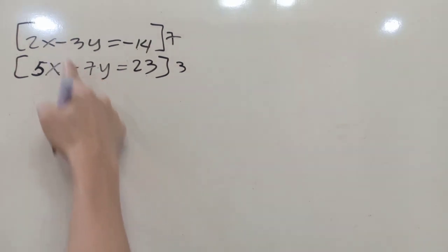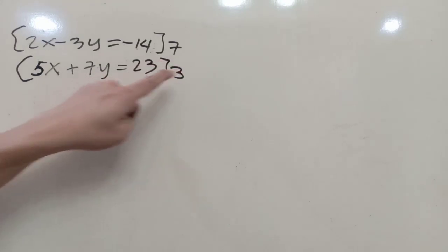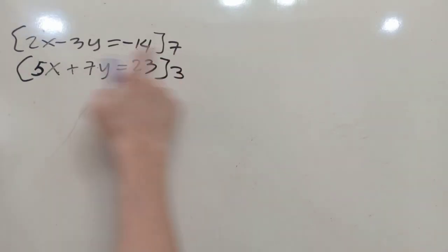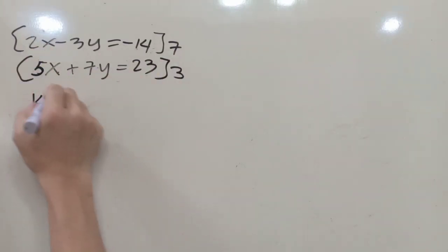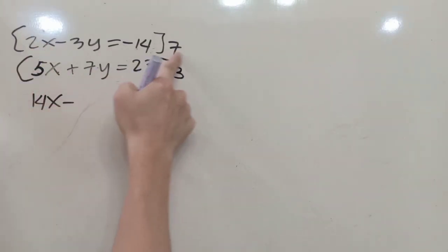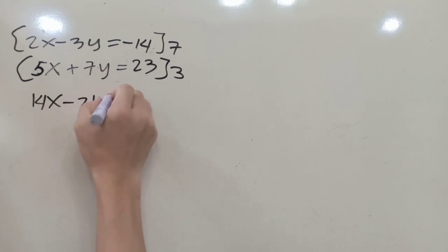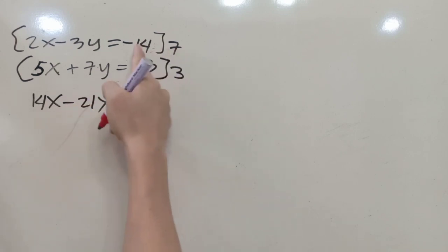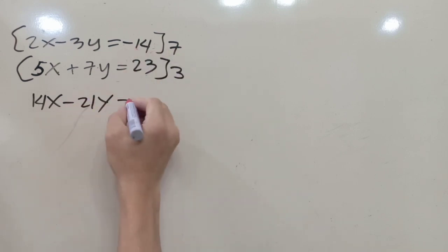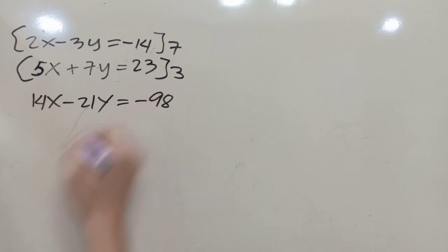After deciding which variable to eliminate, take the numerical coefficients of y and use them as multipliers oppositely. Never mind the sign since the signs are already opposite. So we get: 7 times 2x minus 3y equals negative 14, giving 14x minus 21y equals negative 98.